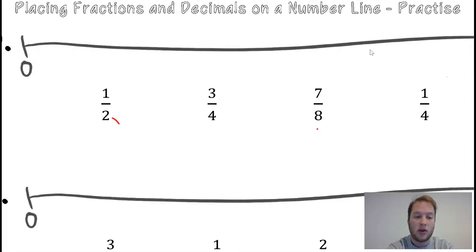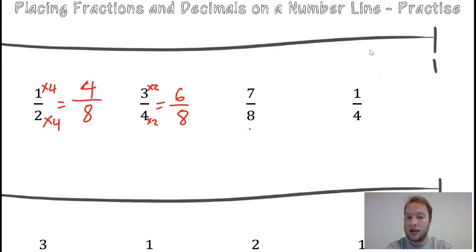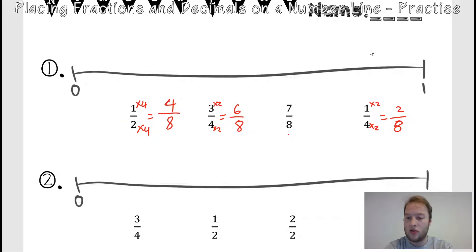To do that: two times four equals eight. Whatever you do to the bottom, do to the top. So now I've got four over eight. My three quarters — four times two equals eight, so that means it's six over eight. Seven eighths, I don't need to do anything, it stays the same. It's already got eight on the bottom. And then one quarter — I need to times it by two to make it eight, so we do the top by two, the bottom by two, and we've got two eighths. These are what we call equivalent fractions — they're worth the same. Two eighths is the same as a quarter; they're worth the exact same, just shown in a different way, broken up into eight parts rather than four.